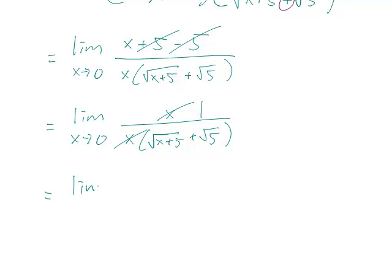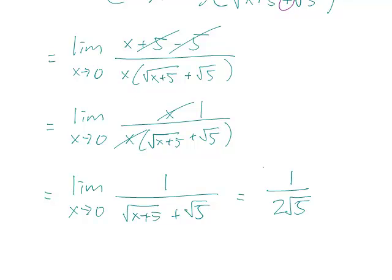So the limit is not actually 0, it's rather 1 over root x plus 5 plus root 5, and when x is equal to 0, this is 1 over 2 square root of 5.